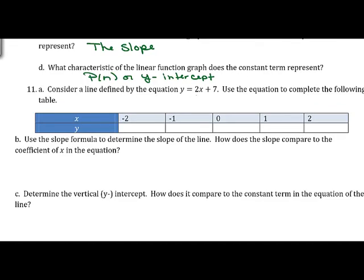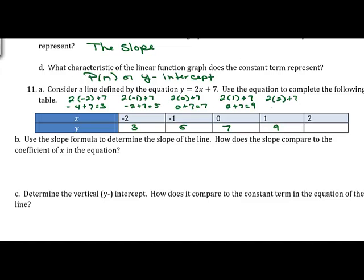Consider the line y = 2x + 7. Completing a table: x = −2 gives 3; x = −1 gives 5; x = 0 gives 7; x = 1 gives 9; x = 2 gives 11. Notice each time x increases by 1, y increases by 2, which is our slope.